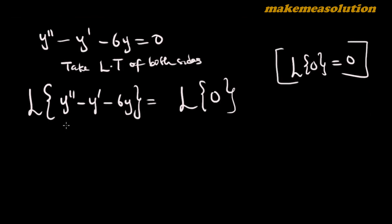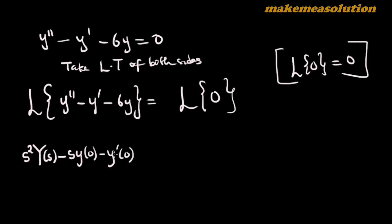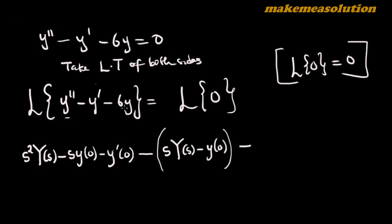Remember what the Laplace transform of y'' is: s² Y(s) minus s·y(0) minus y'(0). That is the expansion for the Laplace transform of y''. Now for the Laplace transform of y', from the definition, it is s·Y(s) minus y(0). And the Laplace transform of 6y: the 6 remains as a constant and the Laplace transform of y is Y(s) itself. The right-hand side equals zero.